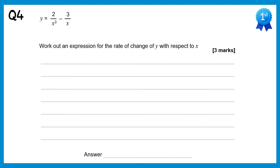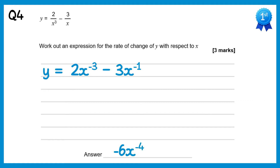For this question we need to rewrite the function without the fractions. We use the negative index rule, so y equals 2x to the power negative 3 take away 3x to the power negative 1. Now we can differentiate: negative 3 times 2 is negative 6, then reduce the power down from negative 3 to negative 4. Then negative 1 times negative 3 gives positive 3, and reduce the power down from negative 1 to negative 2.